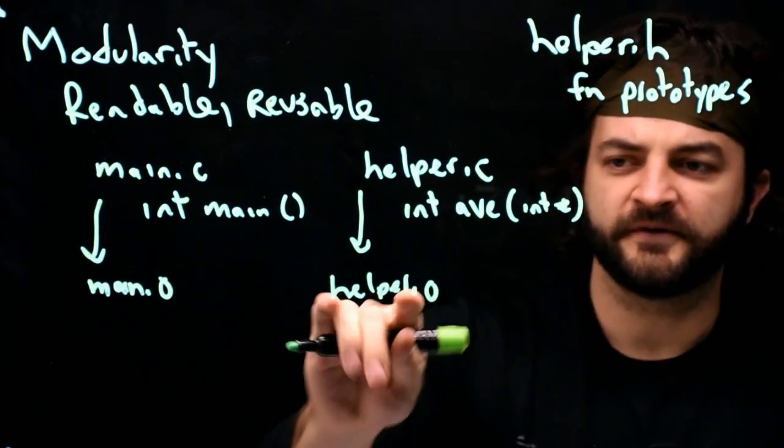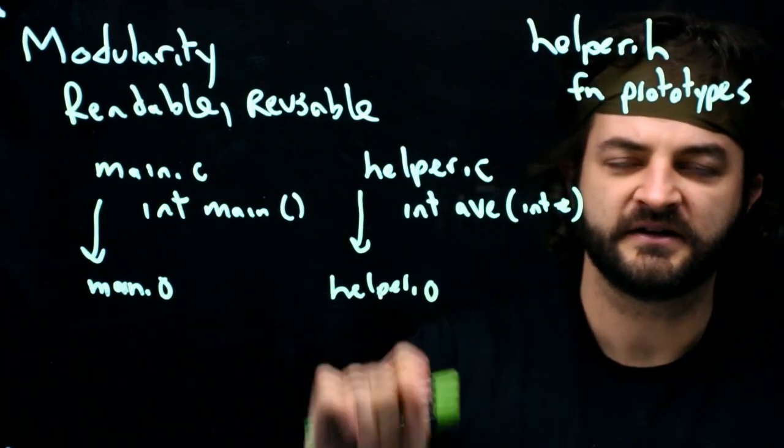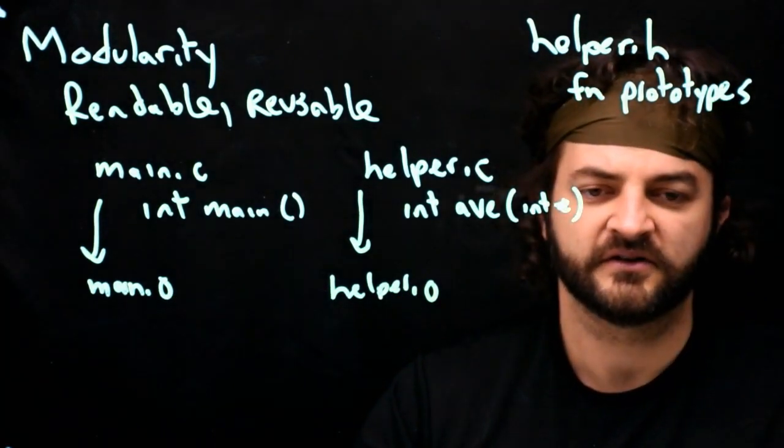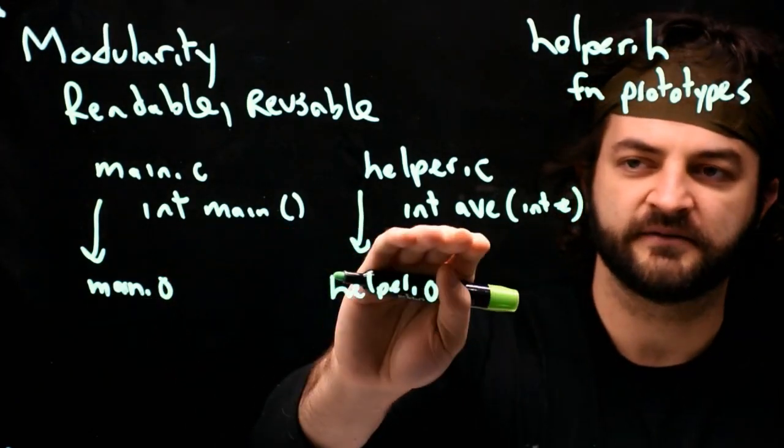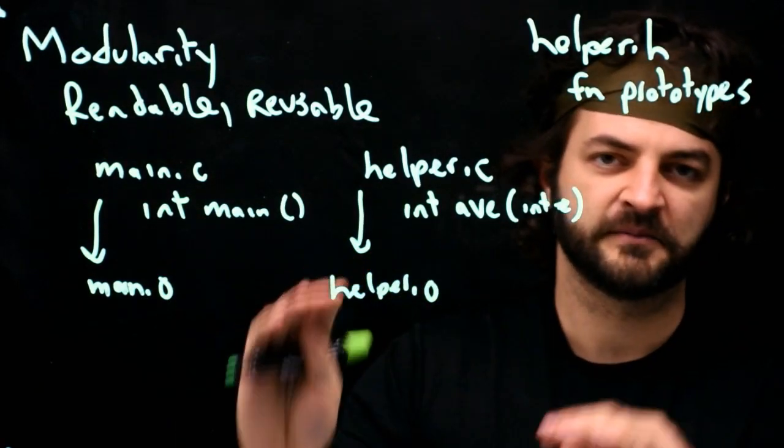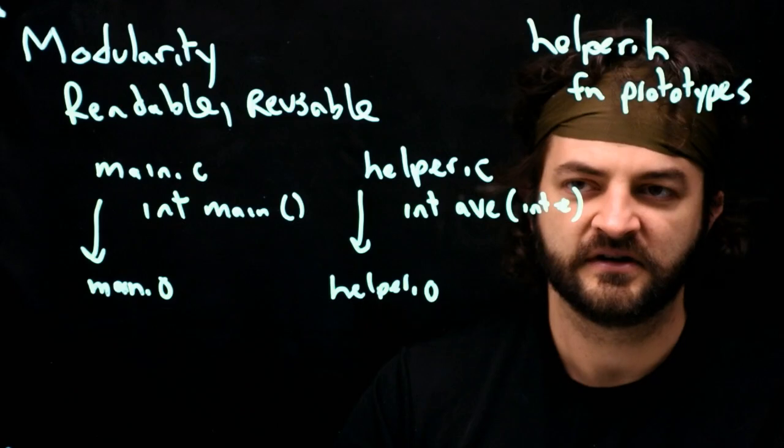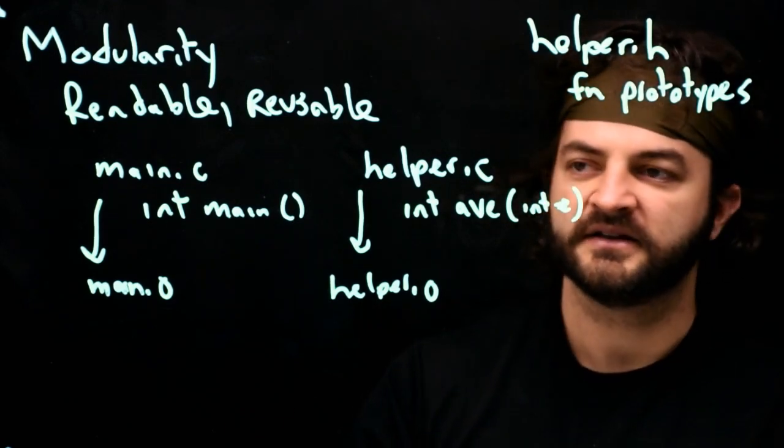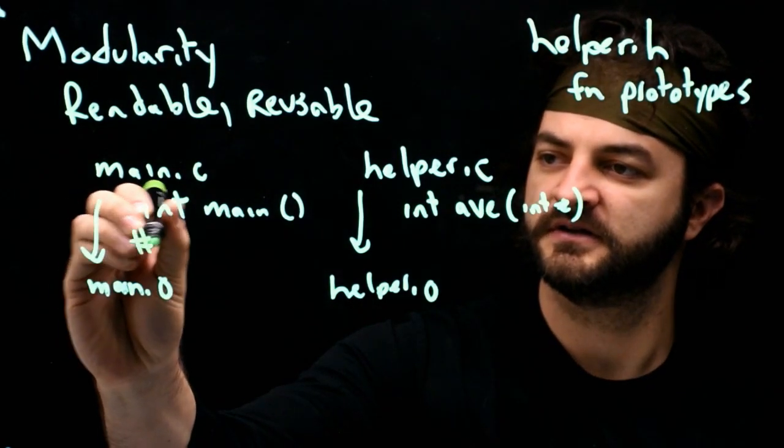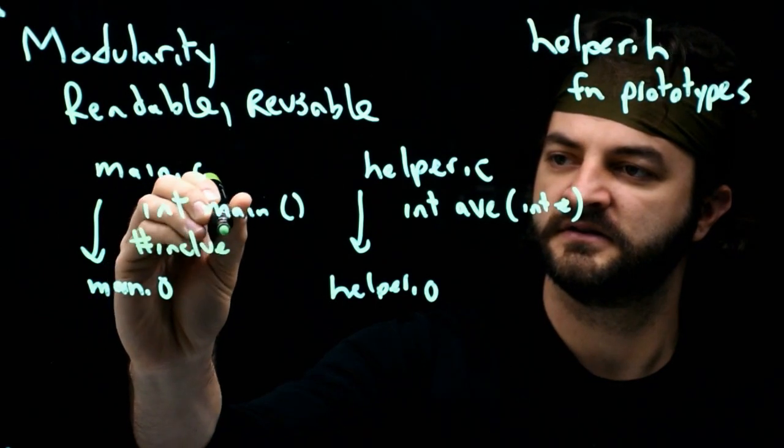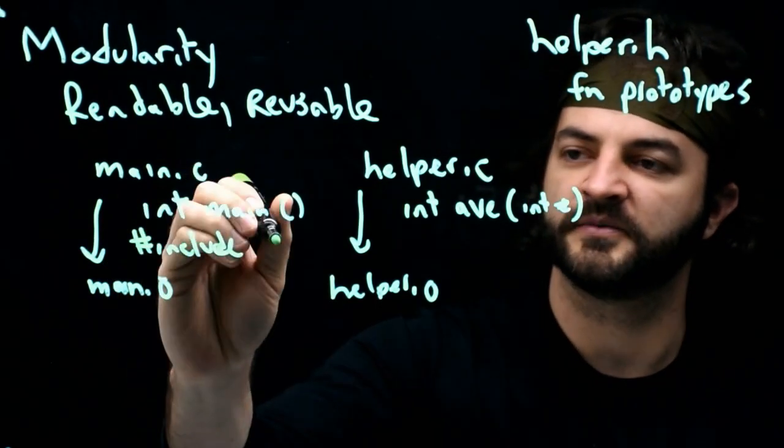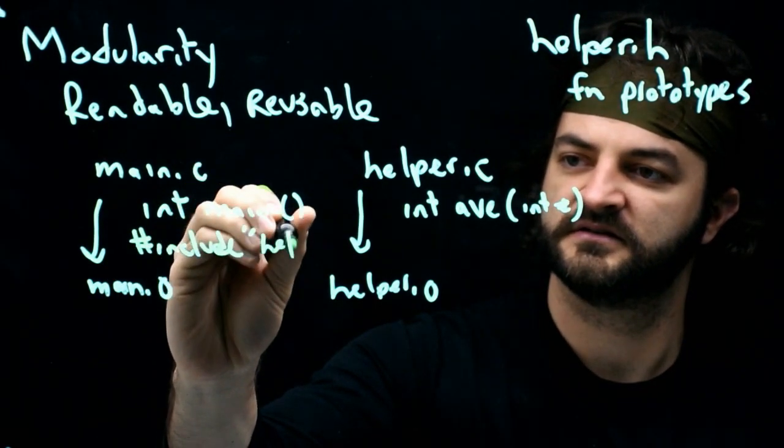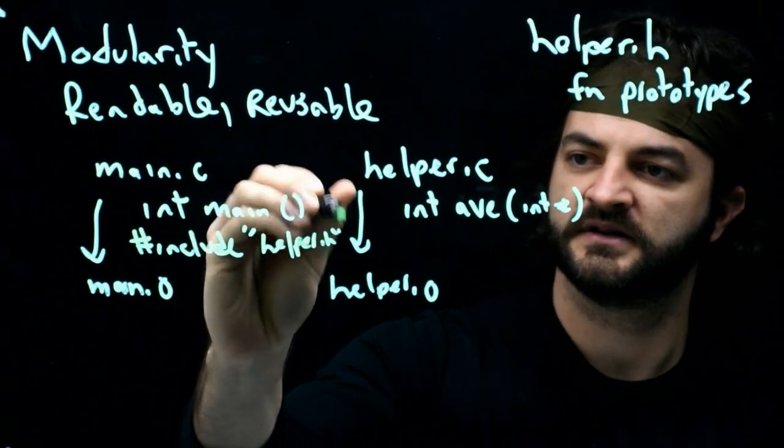If we have a function here and here, they might try to exist in the same piece of memory. If we call average here and we have average here, we might have two spots in memory that try to contain this average function. How do we get around that is we pound include helper.h in each of them.